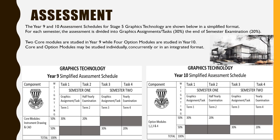Year 9 and 10 assessment schedules for Stage 5 graphics technology are shown below in a simplified format. For each semester, the assessment is divided into graphics assignments and tasks and the end of semester examination. Two core modules are studied in Year 9 while four option modules are studied in Year 10. Core and option modules may be studied individually, concurrently or in an integrated format.